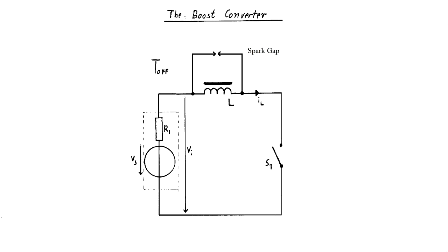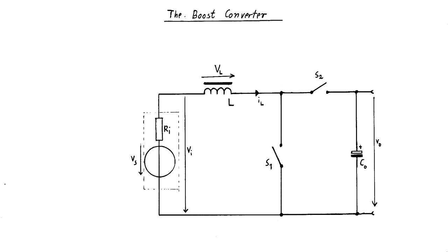And this is how it's done. First, the spark gap is removed. Then a second switch and an output capacitor is added, completing the principal boost converter topology. Now let us go through its operation.